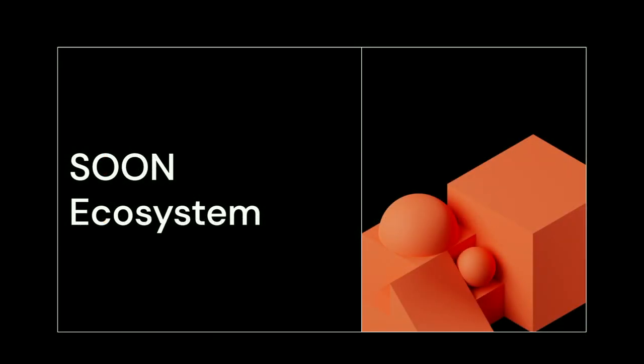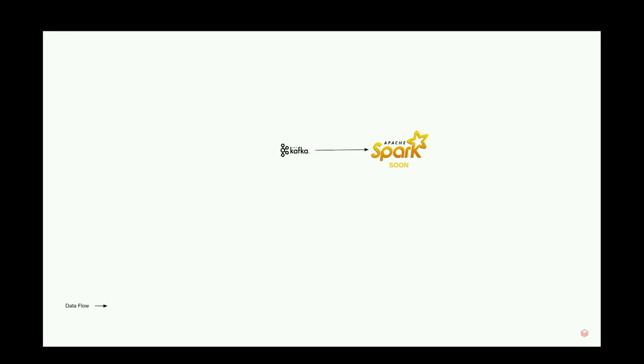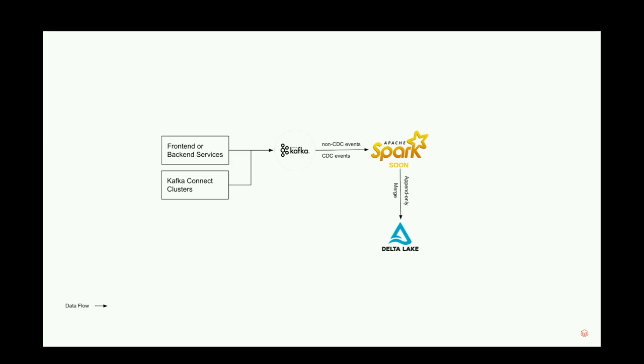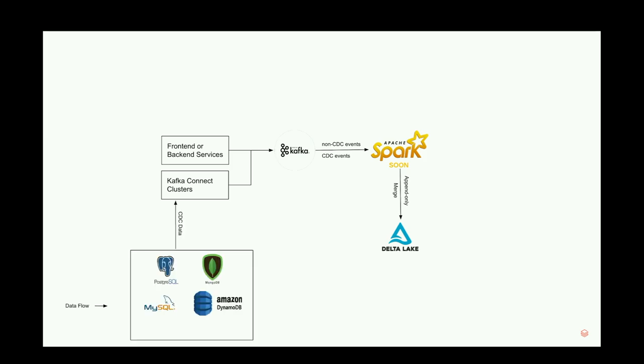Let's look at the Swoom ecosystem at a high level. The Swoom pipeline runs Spark in the middle — it reads from Kafka and writes data to Delta Lake in two ways: append-only and merge. Events in Kafka can be non-CDC events from front-end or back-end services, or CDC events from Kafka source connectors running on Kafka Connect clusters. These source connectors connect to different databases, extract CDC data, and send it into Kafka. Swoom continuously reads those CDC events as micro-batches and applies them to the underlying Delta table to keep it up to date.